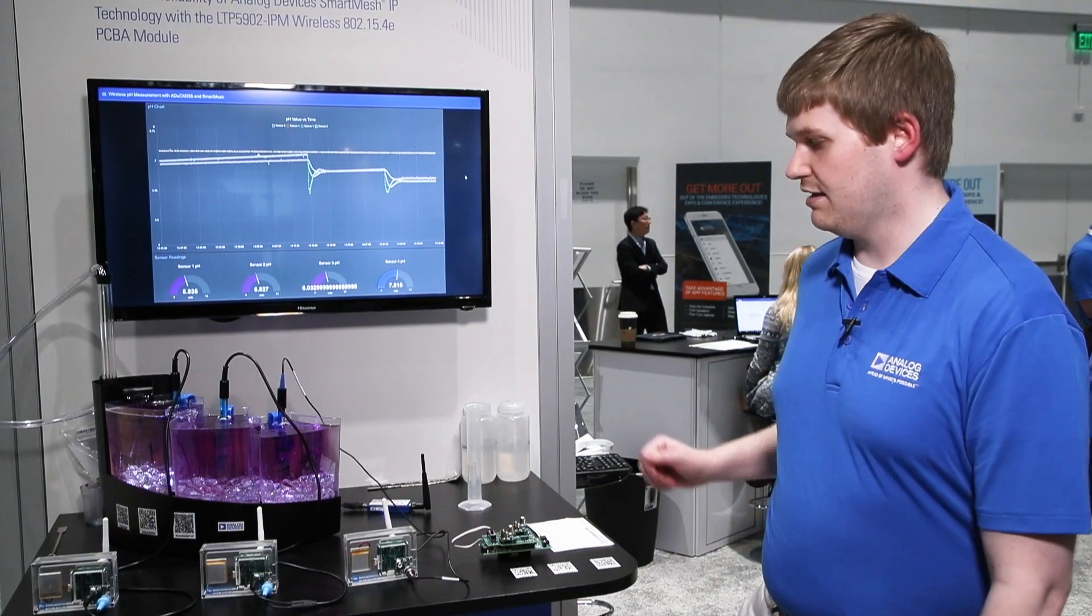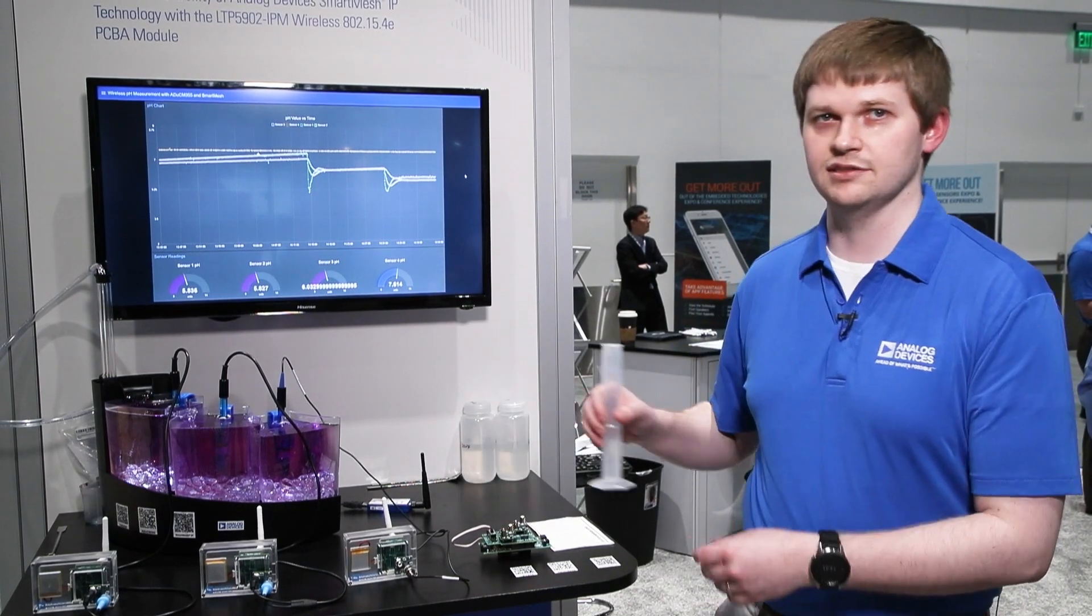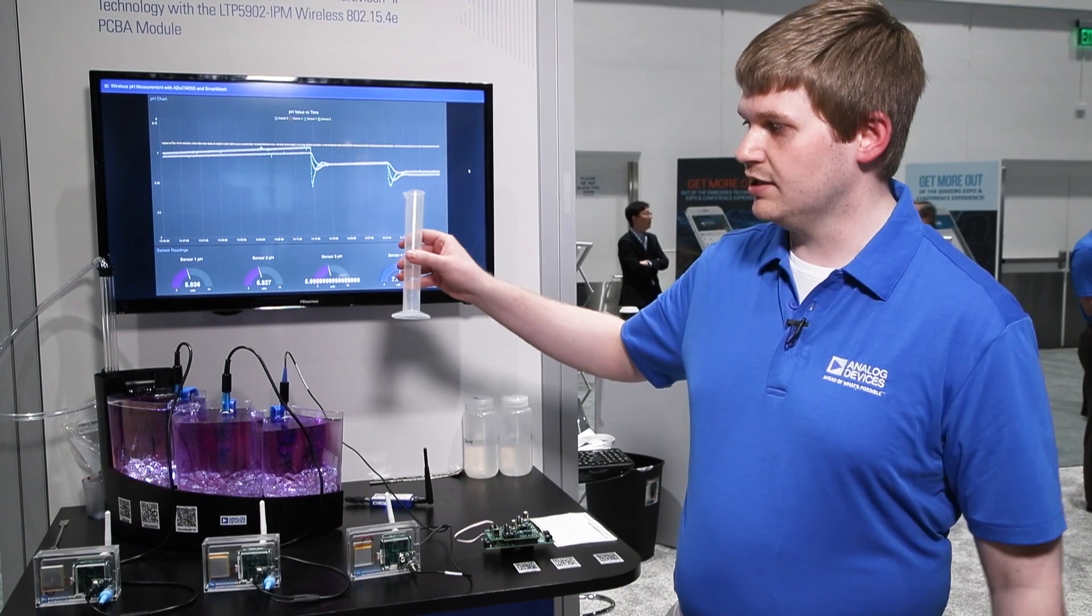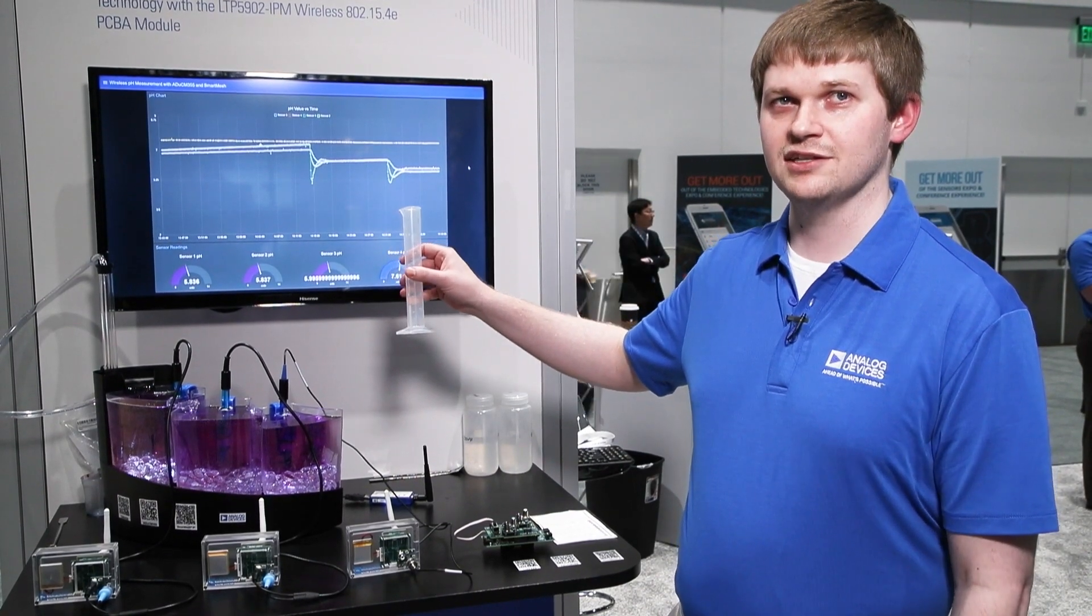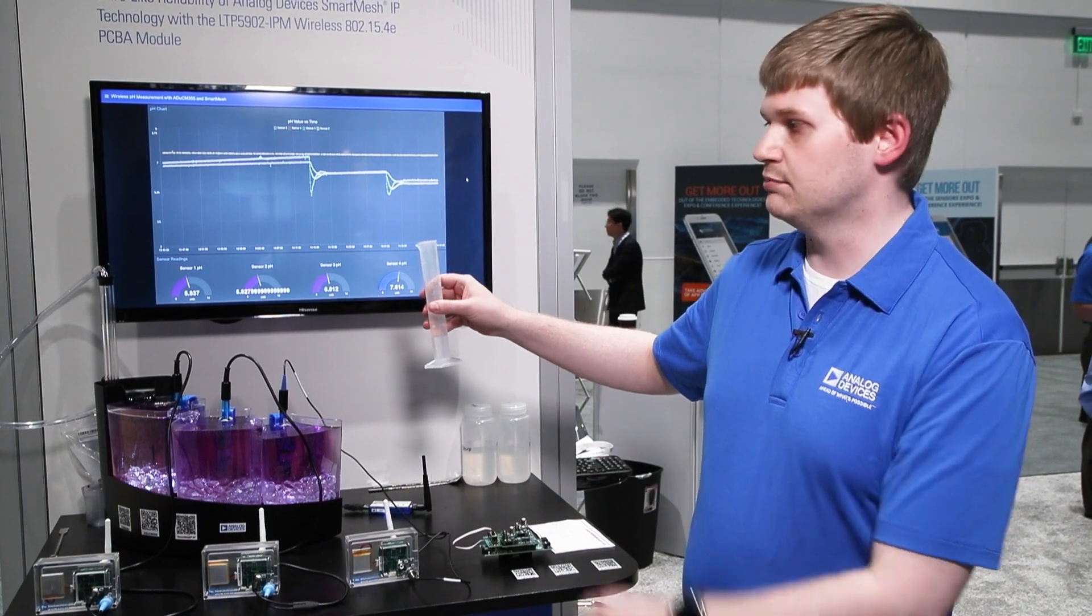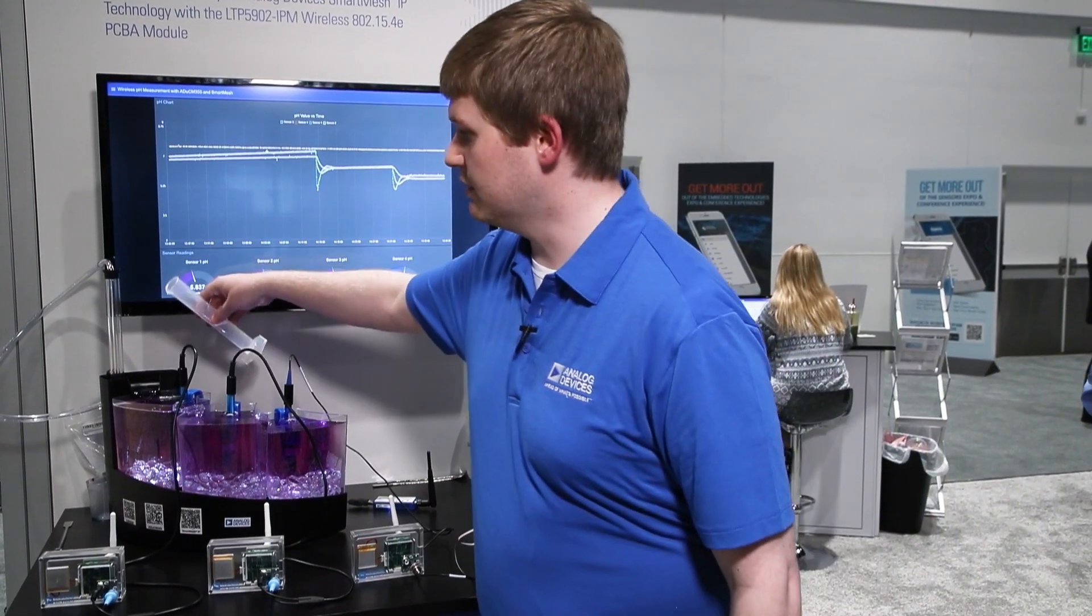So here I have a potassium bicarbonate solution which is an alkaline solution and if I were to pour it into this top tank then you'll see the water change from a pinkish purple color into blue for base. So let me pour this right here.